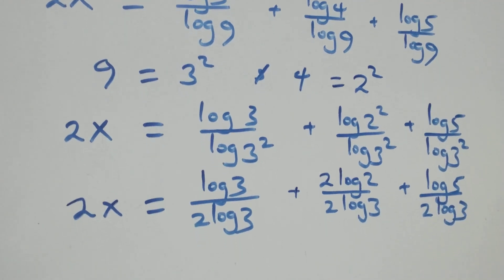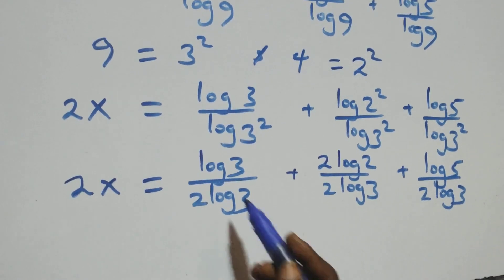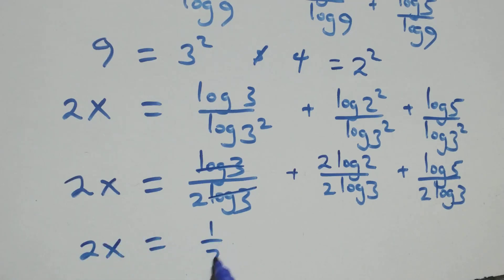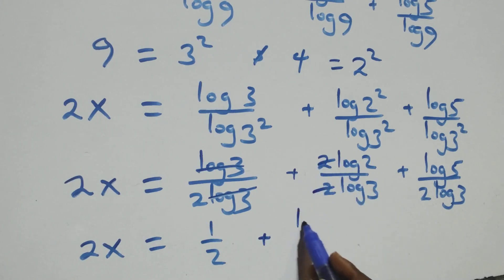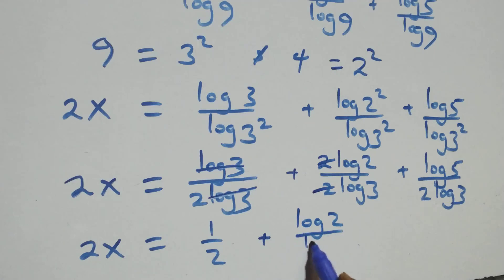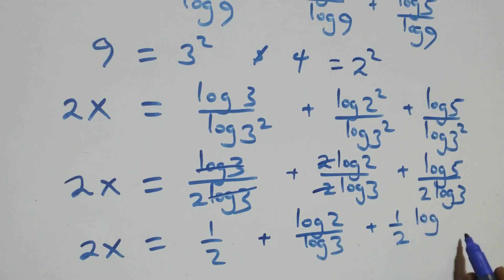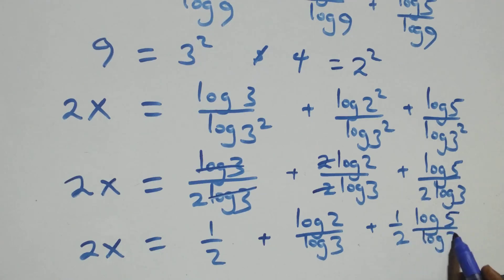Here log 3 cancels with log 3, giving 1 over 2. The 2 also cancels in the middle term, giving log 2 over log 3. And we have plus 1 over 2 times log 5 over log 3.